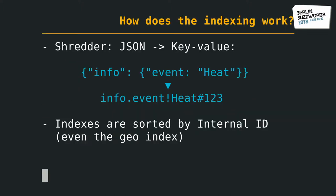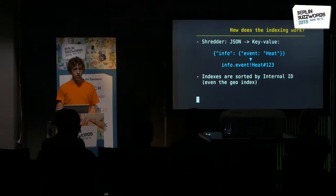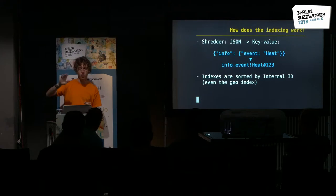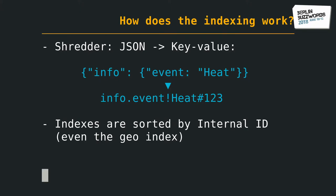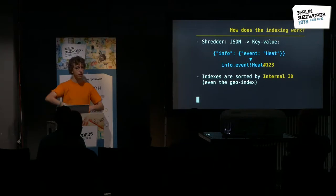So now, how does it work? The key part is the shredder. Every JSON gets shredded into key-value pairs. For most of this presentation, we don't care about the value — I talk only about the key. We have an event called 'heat,' and it gets shredded into a simple key. The nested structure becomes dot notation, and then the value of the input becomes part of the key. In this example, it's a full-text index, so there's an exclamation mark in between. And importantly, every document you insert gets assigned an internal ID — a monotonic increasing number.